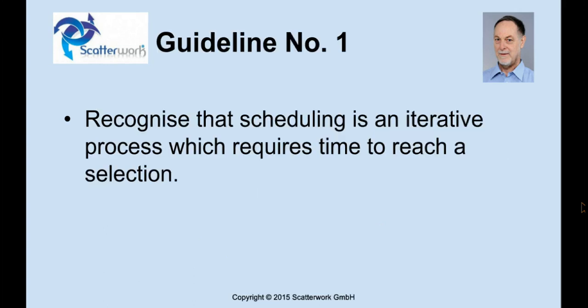The first guideline is to recognize that scheduling is an iterative process, so that means messages come over and back, and it requires quite a lot of messages to find the exact time. This can't be done instantaneously. People who sit in the same office say yes, no, check that out, and so on. But when we're working in a distributed environment, it takes longer. We have to treat it as a process, not just as something that happens in the background.